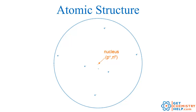Hope you enjoyed this overview of atomic structure. In our next lesson we're going to discuss how to determine the number of protons, neutrons, and electrons in an atom, and also what happens when you vary the number of neutrons and create things called isotopes. We'll see you back here next time at GetChemistryHelp.com. Thank you!